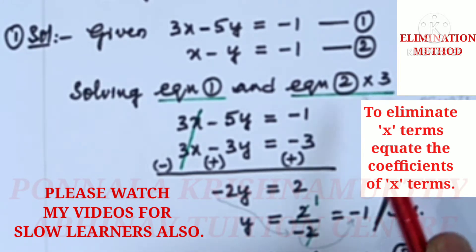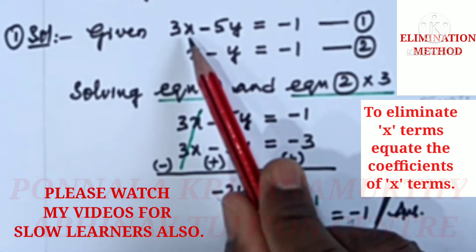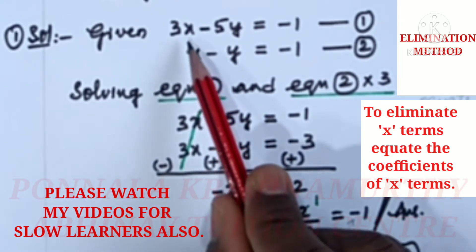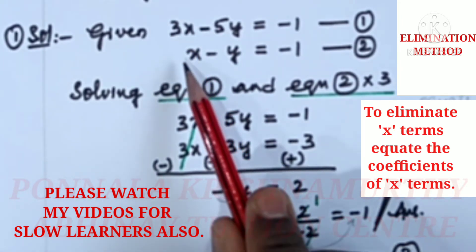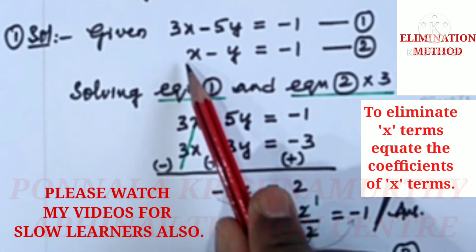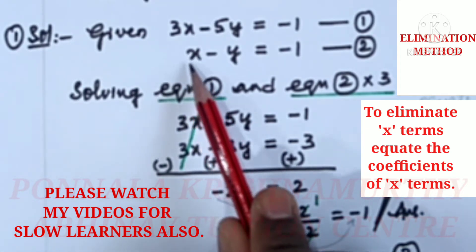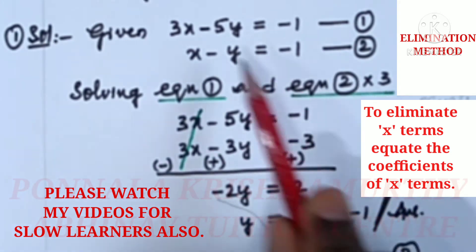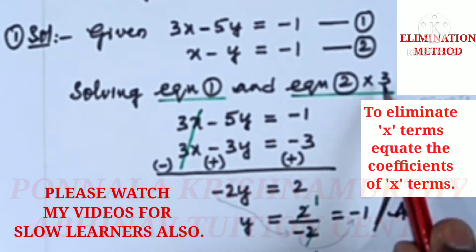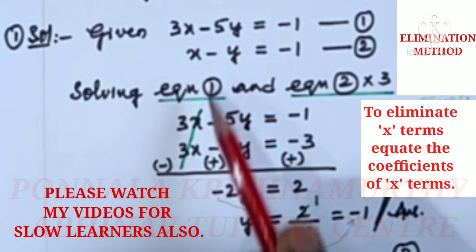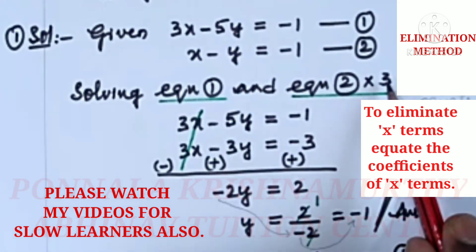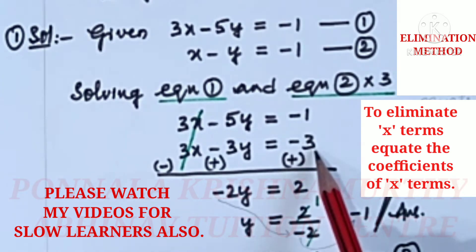Since we have to eliminate the x parts, here we have 3 and here we have only 1. But this should also be 3, so we multiply by 3. So equation 2 becomes: 3x minus 3y equal to minus 3.